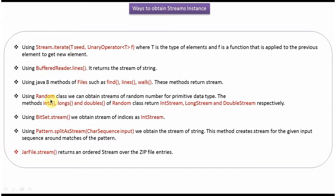Using the Random class, we can obtain streams of random numbers for primitive data types. Using the ints() method of the Random class, we can get an IntStream. Using the longs() method of the Random class, we can get a LongStream. Using the doubles() method of the Random class, we can get a DoubleStream.